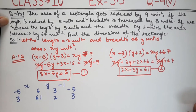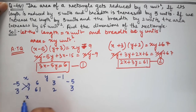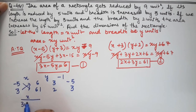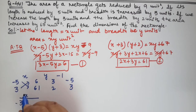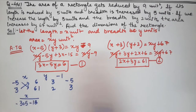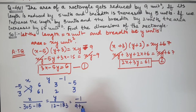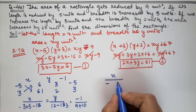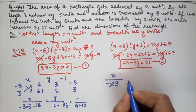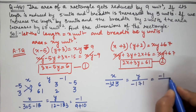We perform the cross multiplication: this times this minus this times this. So x upon: 61 times minus 5 gives minus 305, minus 3 times 6 gives minus 18. Then y upon: 3 times 6 gives 18, minus 61 times 2 gives minus 122, so 12 minus 183. And minus 1 upon: 9 plus 10.